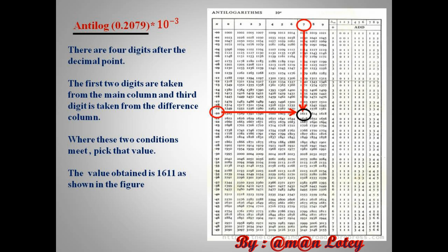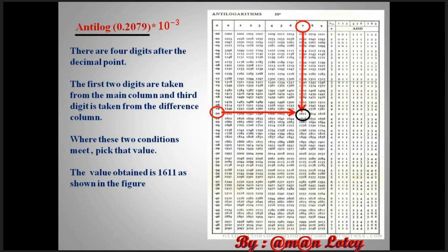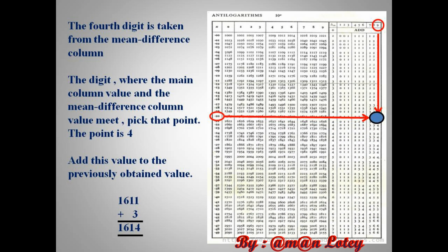Let us calculate the value of antilog 0.2079 × 10 raised to power minus 3. There are four digits after the decimal point. The first two digits are taken from the main column, and the third digit is taken from the difference column. Where these two digits meet, pick that value. The value obtained is 1611, as shown in the figure. The fourth digit is taken from the main difference column. The digit where the main column value and the main difference column value meet, pick that point. The value is 3. Add this value to the previously obtained value; we get 1614.